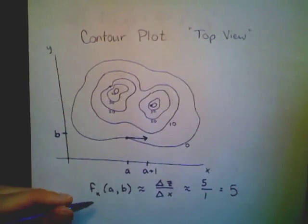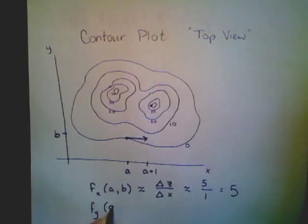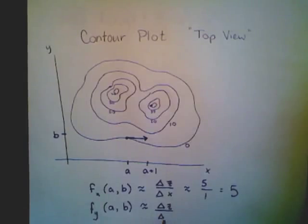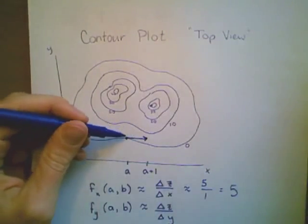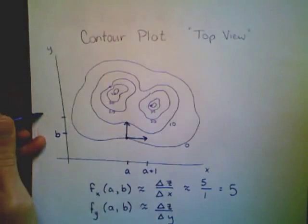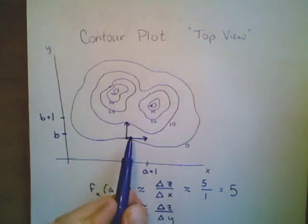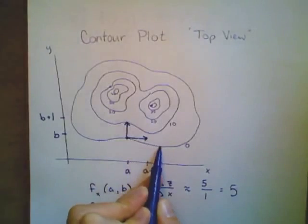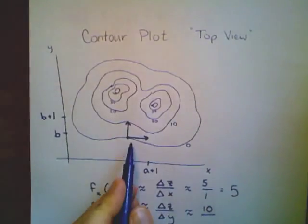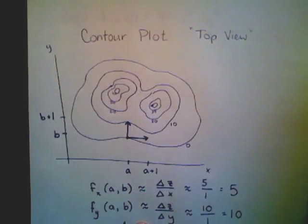We can do the same estimation in the y direction for our partial derivative with respect to y. All of the previous definitions are the same, except we flip-flop what's changing. My partial derivative with respect to y at the point (a, b) is my change in z divided by my change in y. Keeping x constant at a, as y goes from b to b plus one, my z values go from the level curve where z equals zero up to the level curve where z equals ten — a change in z of ten and a change in y of one, which is equal to ten.